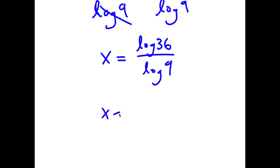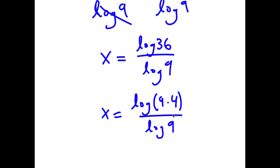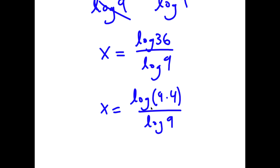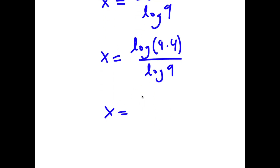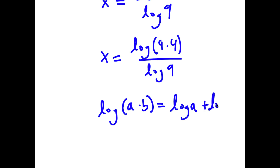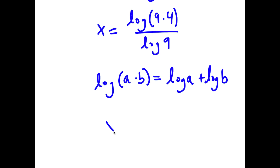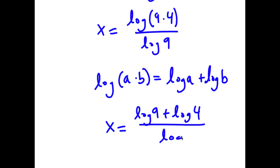So 36, I can rewrite as log of 9 times 4. So I have log of 9 times 4 over log 9. This is the same thing as something in the form log of a times b, which is equal to log a plus log b. So log of 9 times 4 equals log of 9 plus log of 4. Now I have this over log of 9.